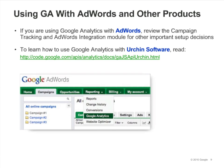Urchin software from Google is similar to Google Analytics, but Urchin runs on your own servers, whereas Google Analytics is a service hosted by Google. If you've licensed Urchin, you can run both Urchin and Google Analytics together on your site. Running them together gives you a great deal of flexibility and analysis capability. You'll need to make modifications to your tracking code. While this isn't covered in the course, you can learn how by following the link shown in the slide.